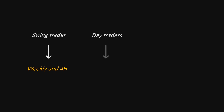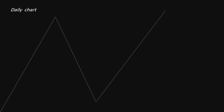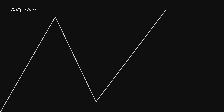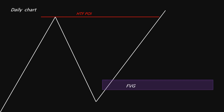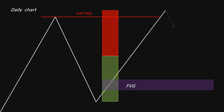Now let's discuss timeframes, as they are very important. If you're a swing trader, use the weekly and four-hour timeframes. For day traders, the one-day and one-hour timeframes are suitable. If you're a scalper, stick to the four-hour and 15-minute timeframes. Look for a purge of external liquidity on a higher time frame, then mark out the higher time frame fair value gap as your target liquidity.